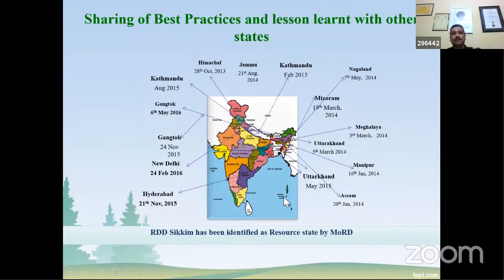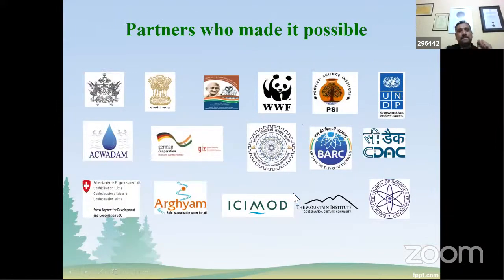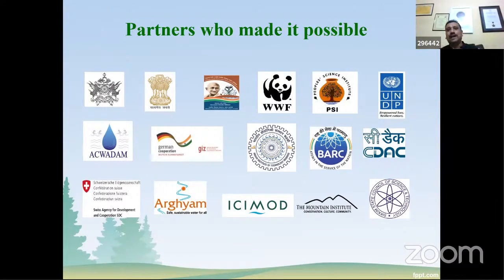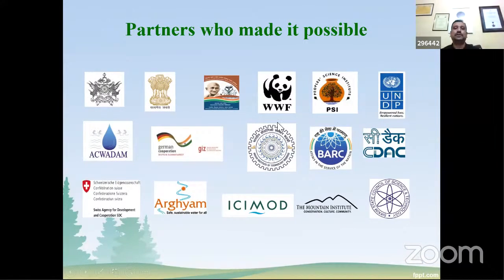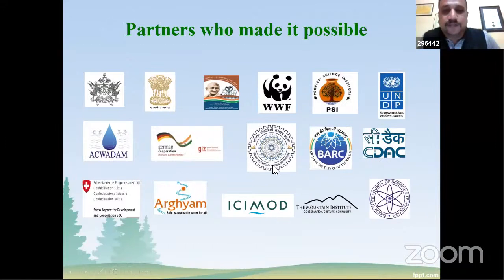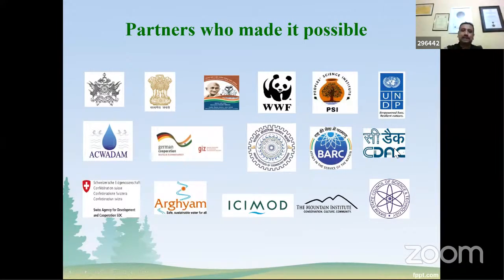Initially we had no funds to implement this program. We demonstrated pilots to the Government of India, and the Planning Commission included spring shed work in the permissible list of MGNREGA. Now anyone across India can use MGNREGA labor to implement spring shed work. We have been documented in the United Nations resource book for 2015. Our work has been a collaborative effort — with support from Government of India, Planning Commission, MGNREGA, WWF, People Science Institute, UNDP, Aquadem, GIZ, IIT Roorkee, and BARC, which helped with isotope study for spring shed identification.